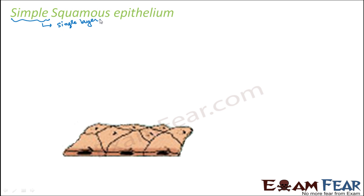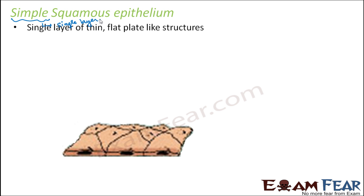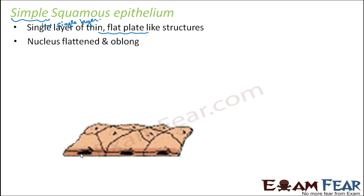Now we are talking about simple squamous epithelium. It is a single layer of thin flat plate-like structures. Squamous refers to the shape — the cells are generally thin and flat. As you can see in the picture, they are quite flat as well as thin. When arranged in one single layer, it is known as simple squamous epithelium. The nucleus in these cells is flattened and oblong.